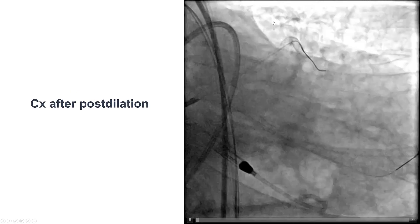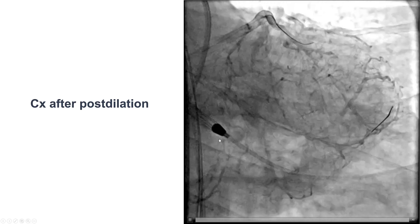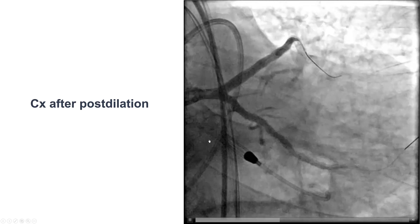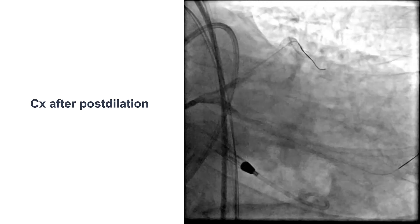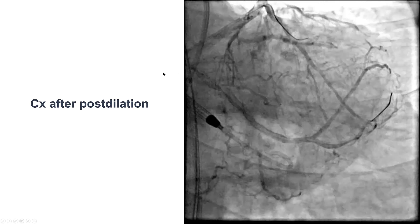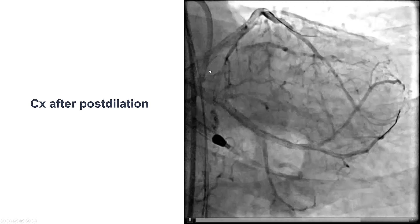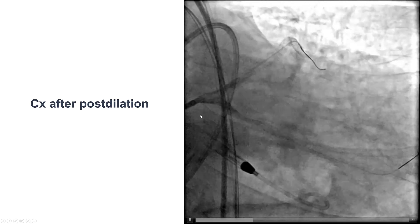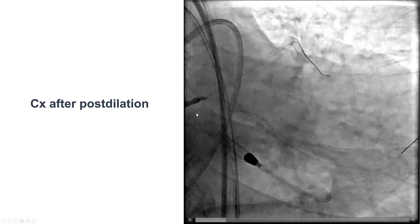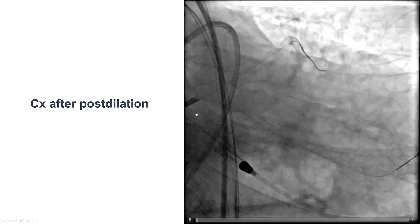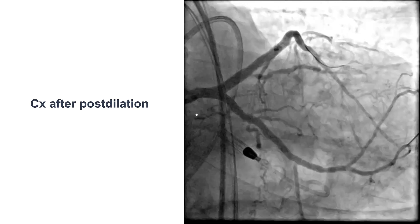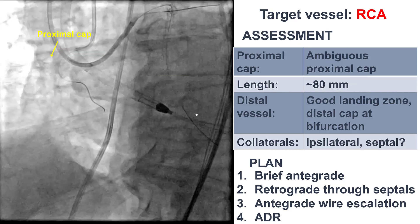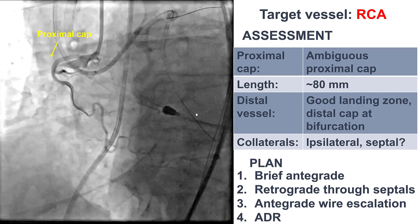We had now successfully recanalized the LAD and the circumflex, and the question was whether to stop or proceed with the right coronary artery. The reasons to continue were that we had used relatively low dose of radiation and contrast, and we had an Impella device that could provide hemodynamic support. The downside was that if something were to happen, we were already starting with some contrast and radiation administered. The decision was to attempt the RCA CTO.